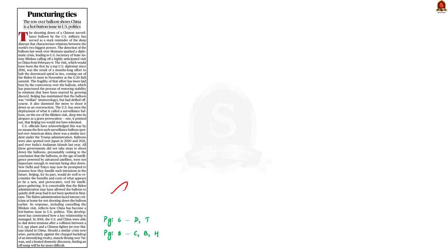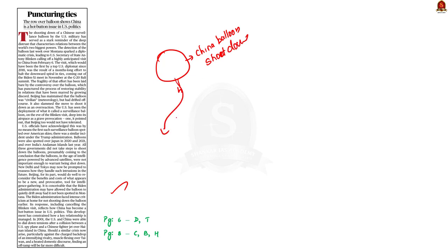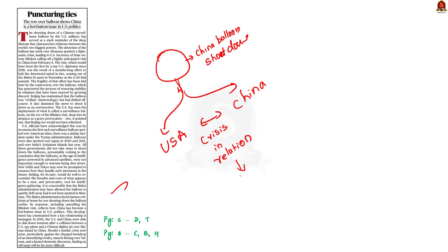On February 4th, the US military shot down a Chinese air balloon which was detected over the Montana state of the USA. The United States is claiming that it was a surveillance balloon whereas China says it was a civilian meteorological balloon that got drifted off course. The shooting down of this balloon has sparked a diplomatic crisis and has strained the already weakening US-China relations, leading to the cancellation of a highly anticipated visit of US Secretary of State Antony Blinken to China.